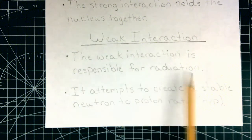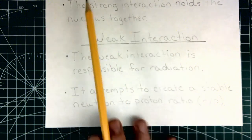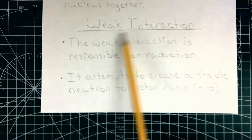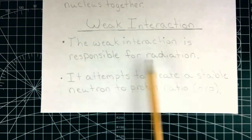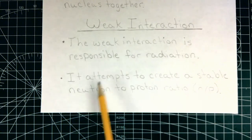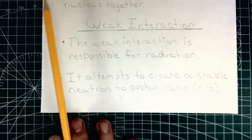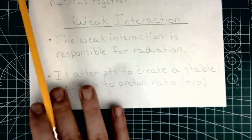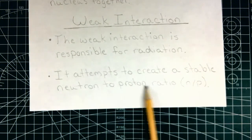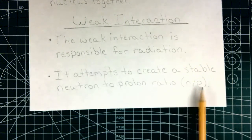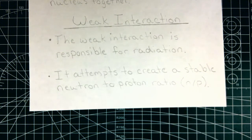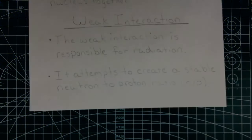The second force I want to talk about is the weak interaction. The weak interaction is responsible for radiation, and what it's attempting to do is create a stable neutron-to-proton ratio, an n-to-p ratio that is stable. I have a graphic to explain that.